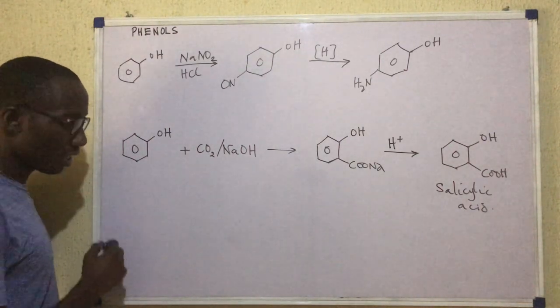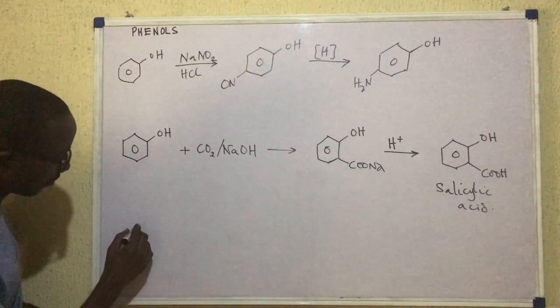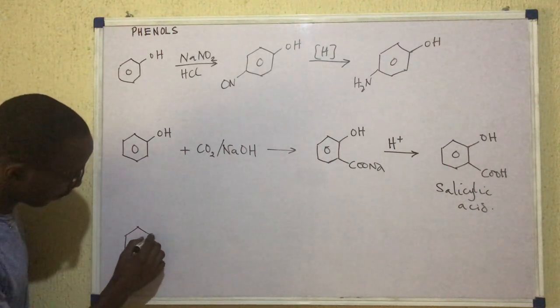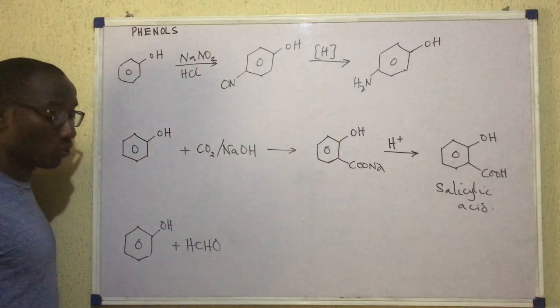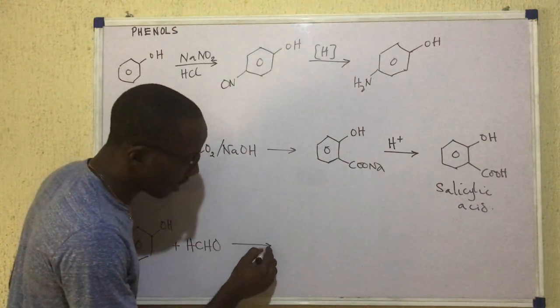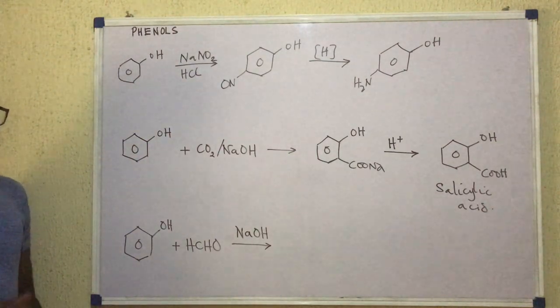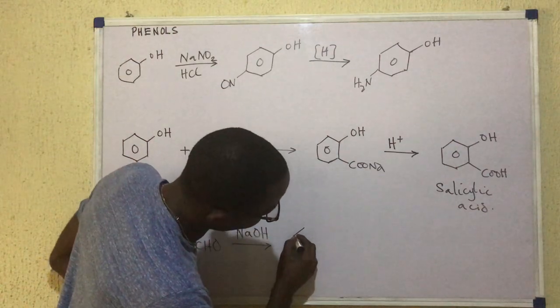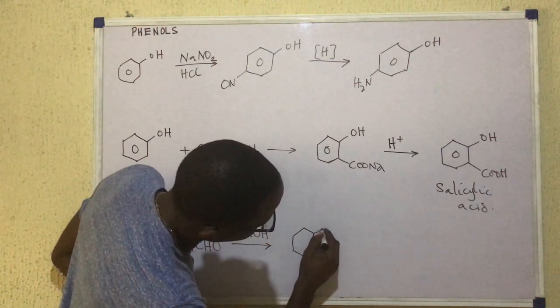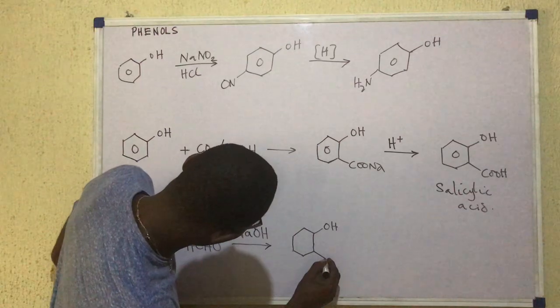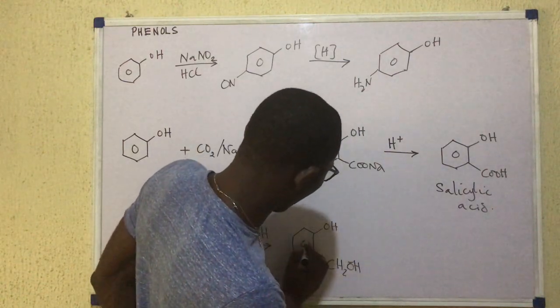Beyond that reaction, the next reaction we want to look at here is this. This is phenol. This time it is reacting with methanal. Methanal is HCHO. It's also called formaldehyde. And that reaction is occurring in the presence of sodium hydroxide. When this takes place, we are going to get two products that look like this. So we have our OH there. And then on this side we have CH2OH. And then this is one product with that.